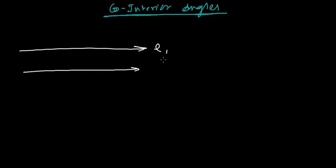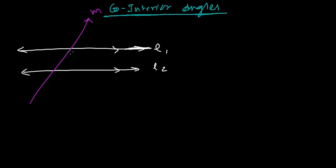Let's say this is parallel line l1 and this is parallel line l2 — this symbol means parallel. If this is my transversal line m, then co-interior angles means both angles must be on the internal part of the same side. If you're on this side, both angles are on that same side.